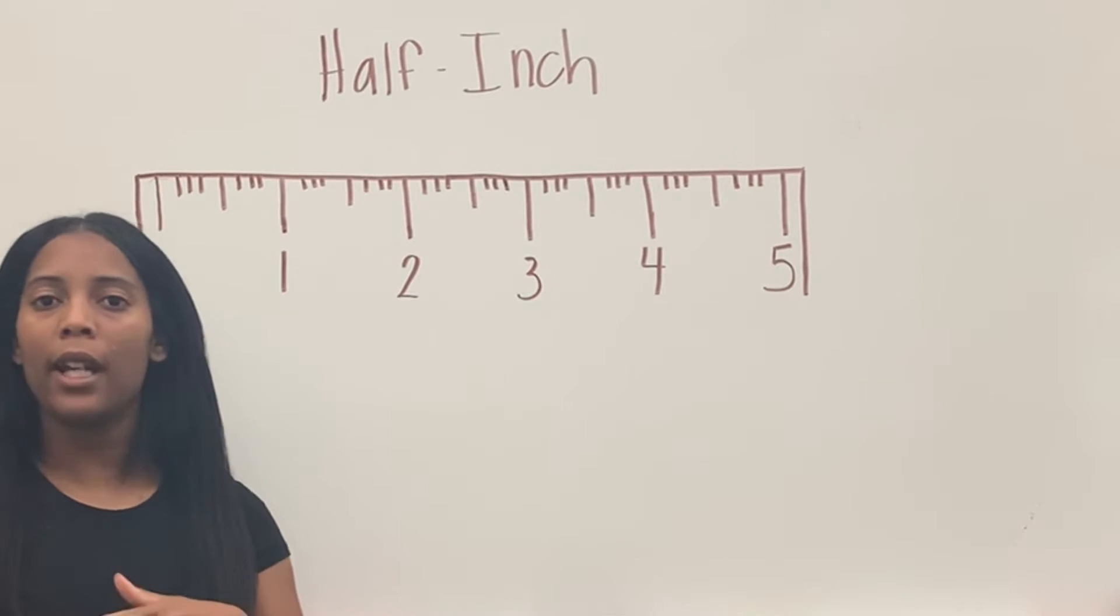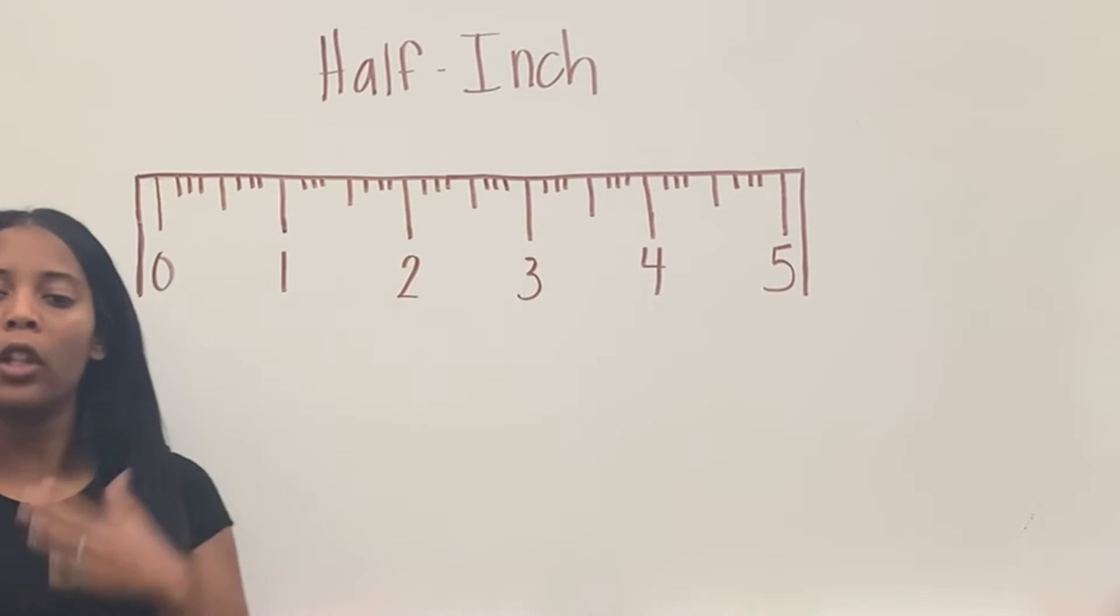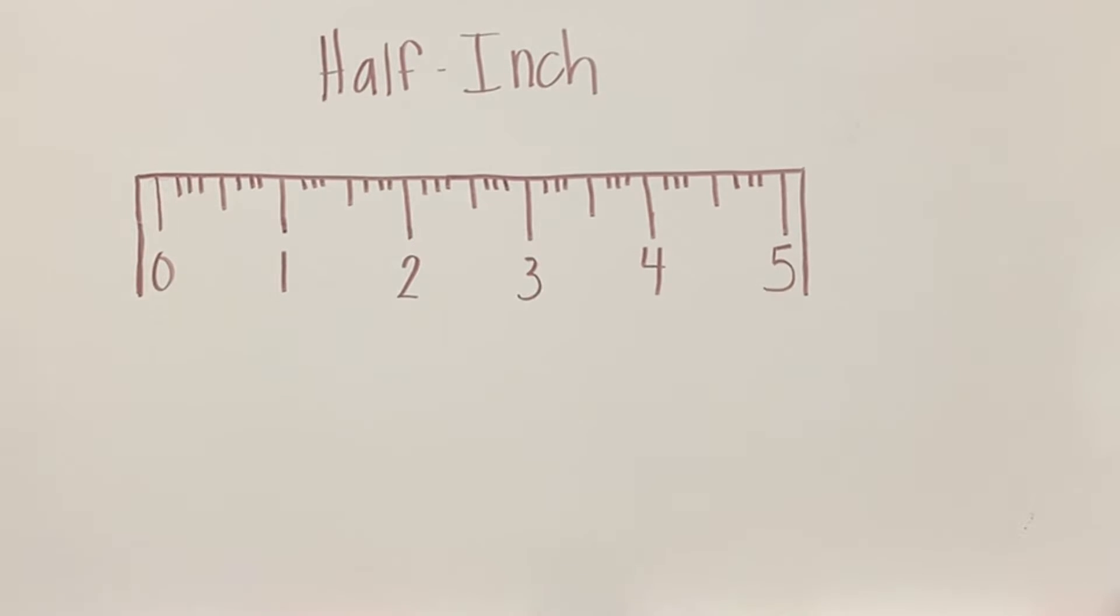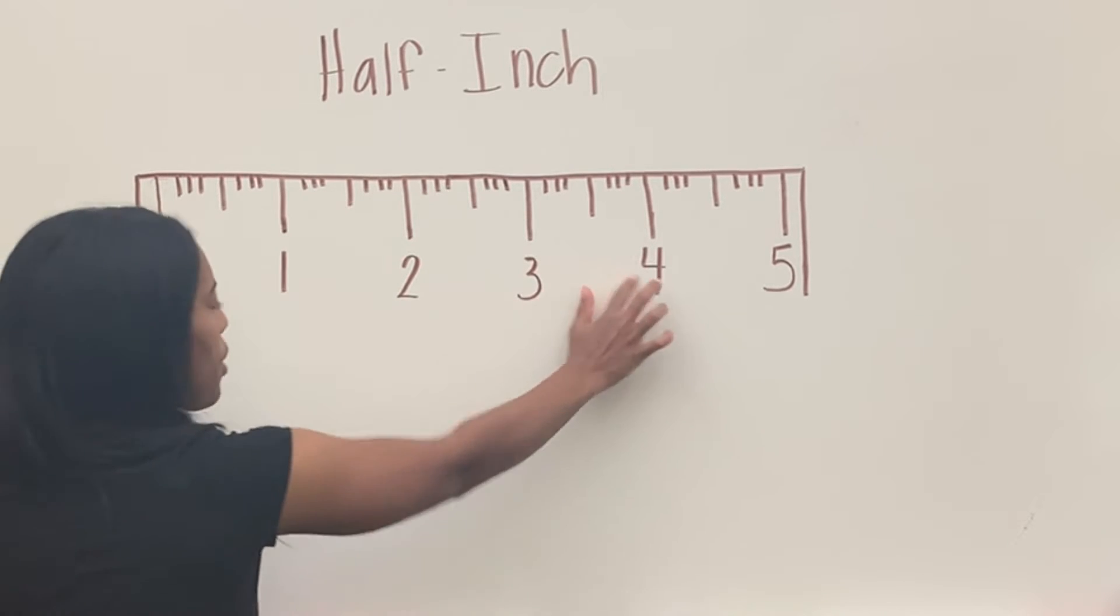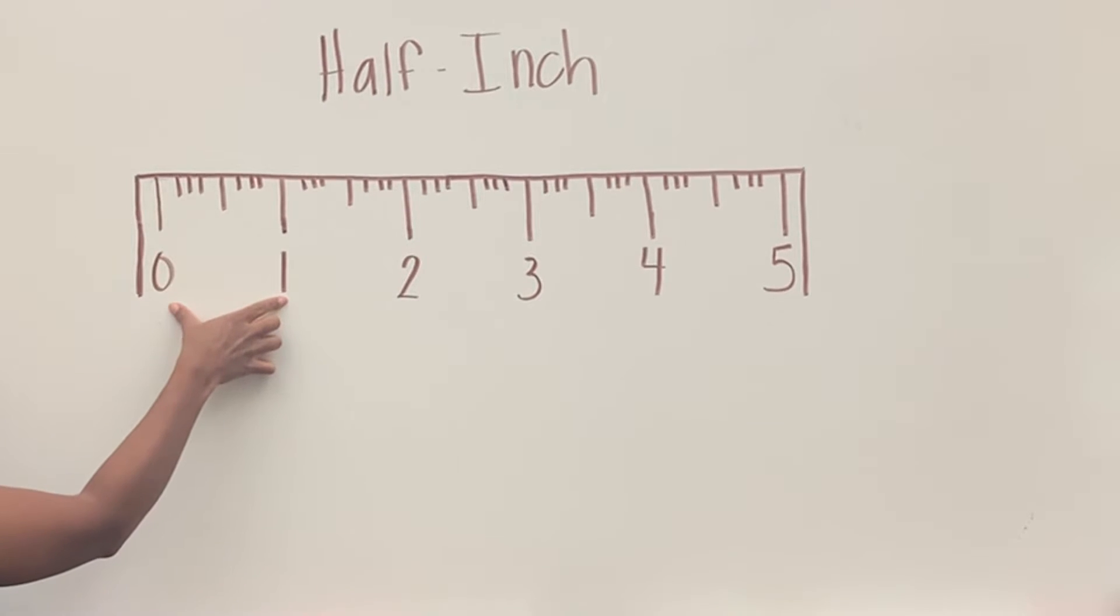We've learned how to measure to the full inch already, but if you look at your ruler really closely, you remember the lines, but then you have one line that's a lot longer than the others, which will be in the middle. It's before you get to the next number. So say if I'm in between zero and one.